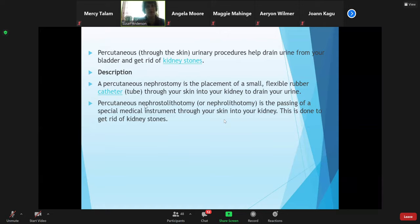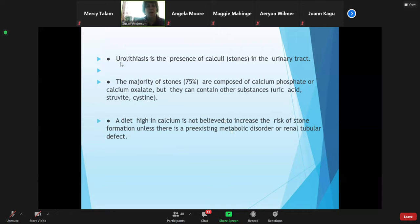If there's a blockage from a stone and your kidney is not draining, a nephrostomy tube would be put in directly into your kidney to drain your urine. We talked about what urolithiasis is - the presence of stones in the urinary tract. The majority of stones are calcium phosphate or calcium oxalate. Other substances like uric acid can cause stones. Don't get caught up in all the different types of stones - recognize there are three or four different categories.